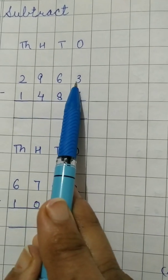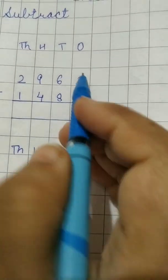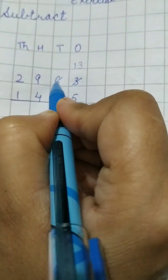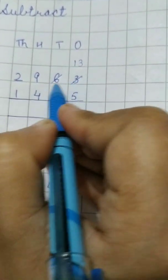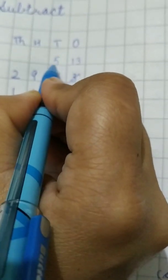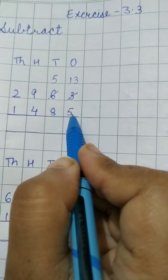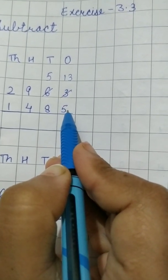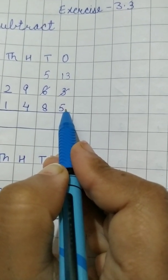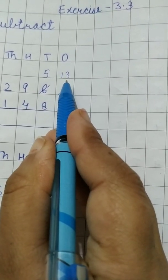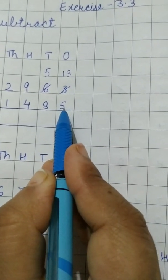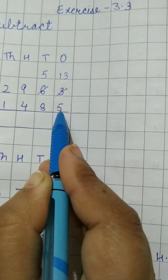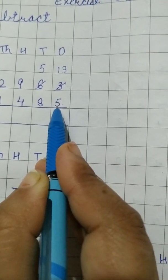Now when this will borrow from 6 it will become 13 and 6 when it will give 1 to this number it will become 6 minus 1, 5. Now see we have to subtract 13 and 5. Now in the last video also I told you that you have to go from this to this number. We have to start from the next number to the lower one. Lower one is 5. So we have to see next number to 5 is 6.